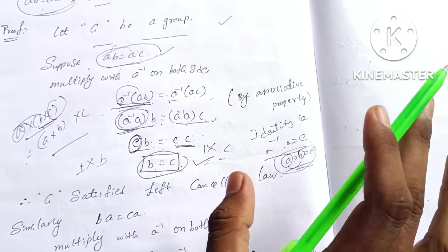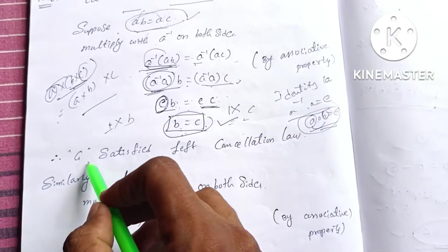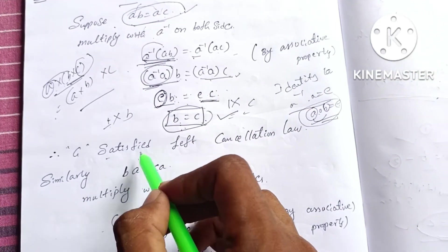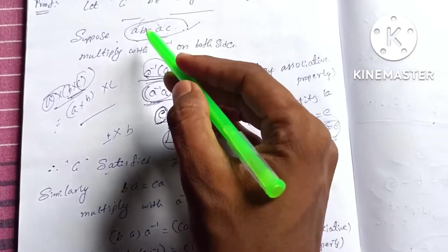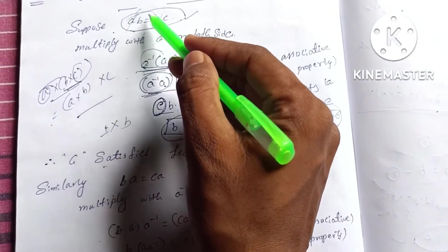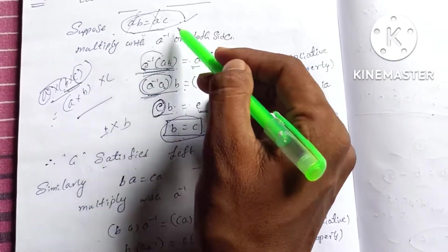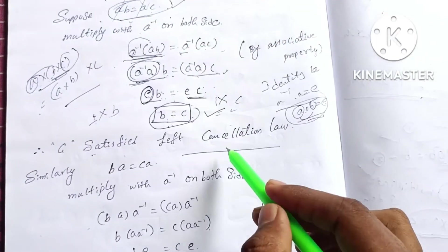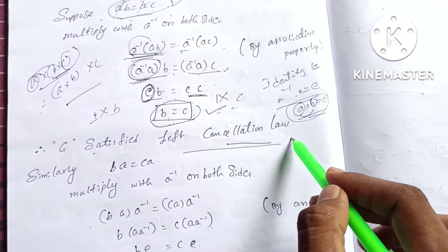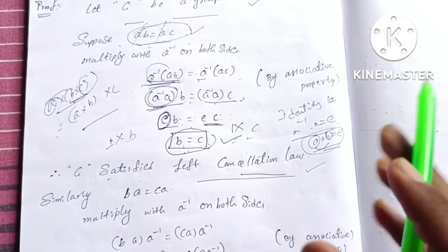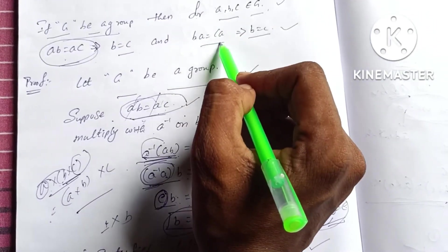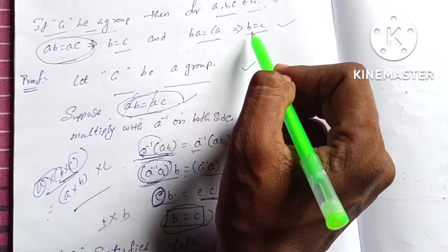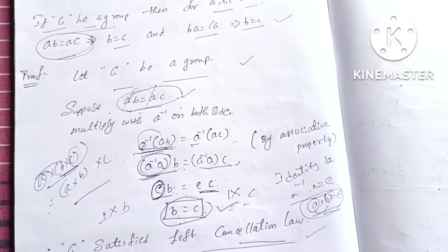Therefore, G satisfies the left cancellation law. Now second, we prove that BA equal to CA gives rise to B equal to C.